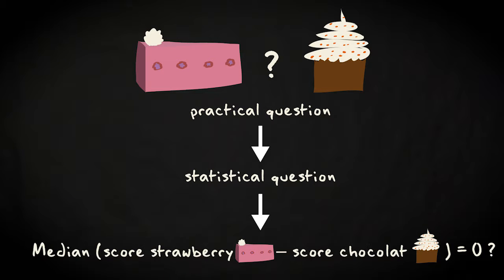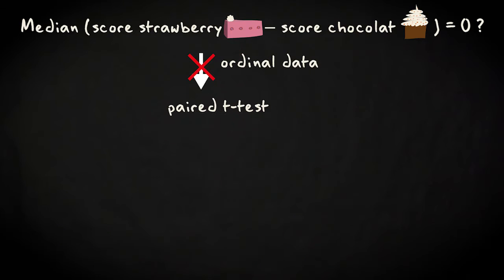The question becomes, is the median of the differences between the pastry scores different from zero? It is a two-sided test. You cannot use a paired t-test because the data is ordinal.